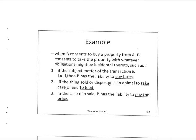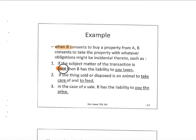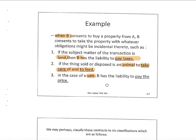Here is an example: when B consents to buy a property from A, B takes on the property along with whatever obligations might be incidental to it. For example, if we buy land, B must pay taxes because the land purchase is related to taxes. For instance, if the land is a sheep farm, then B must feed and take care of the sheep. In a sale, B must pay the price.